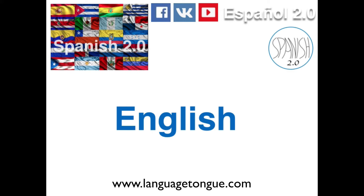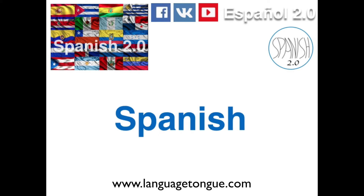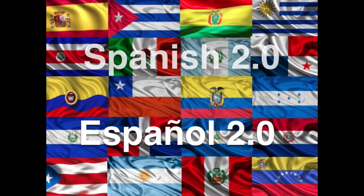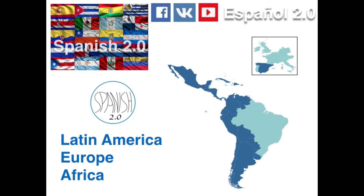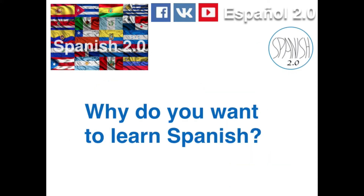English is the biggest, most spoken language in the world, but Spanish is right up there as one of the most spoken languages natively. It's spoken by a lot of people and it's the native language of 21 countries all around the world — spoken in Latin America, Europe, and Africa.